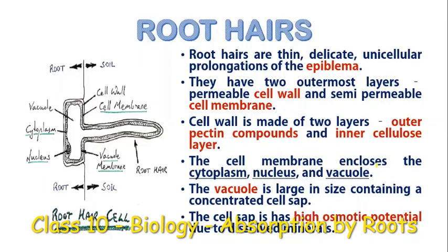Root hairs are unicellular prolongations of the epiblema. The epiblema is the outermost layer of the roots. As we can see, the root hairs generally have a cell wall and a cell membrane. The cell wall is made of pectin and cellulose, and the cell membrane encloses the cytoplasm, the nucleus, and the vacuole.